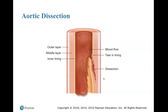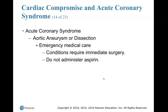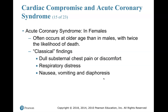Emergency medical care for aortic conditions requires immediate surgery. Do not administer aspirin — we want the blood to be able to clot. In females, acute coronary syndrome often occurs at an older age than in males, with twice the likelihood of death. Classical findings are dull substernal chest pain or discomfort, respiratory distress, and nausea, vomiting, and diaphoresis.